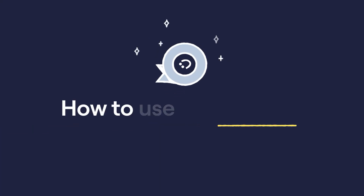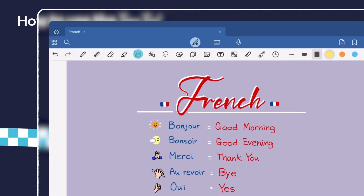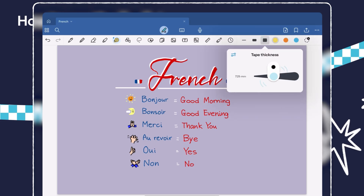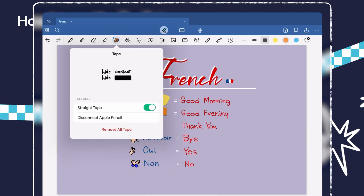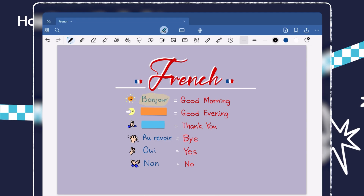Here's how it works. Using the Tape Tool is simple. Locate the tape in the toolbar and tap on it. Tap on the desired thickness of the tape or use the slider to customize. Use your pen to draw a line or shape over the content you want to hide. To make a straight line, hold and pause your pen while drawing the tape. You can also select Straight Tape in Settings. The content underneath will become concealed behind the tape. To uncover the hidden text, simply tap the tape with your finger.